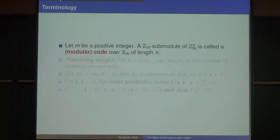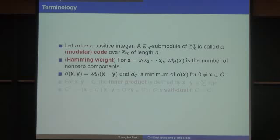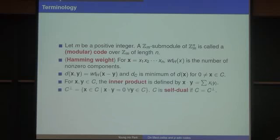A modular code, or just the code of Z/p^e, is a sub-module of Z/p^e to the n. The Hamming weight is the number of non-zero components, and it gives the minimum distance of a code. The inner product is defined as usual by the standard inner product, and the self-dual code is defined the same as before over a field.